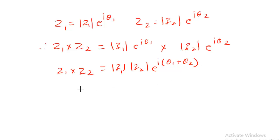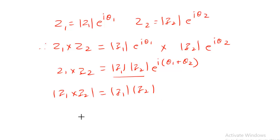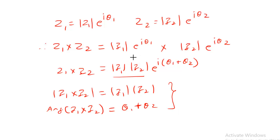So when taking the product of two complex numbers, their moduli are multiplied: |Z1 × Z2| = |Z1| × |Z2|. The argument of Z1 × Z2 equals θ1 + θ2, which is the sum of the individual arguments. This result is derived from Euler's form. Similarly, for division of complex numbers, the argument will be equal to θ1 − θ2.